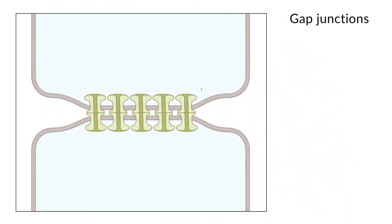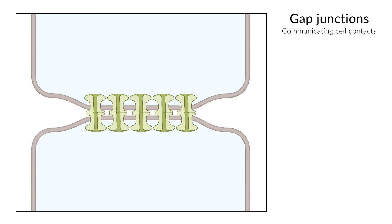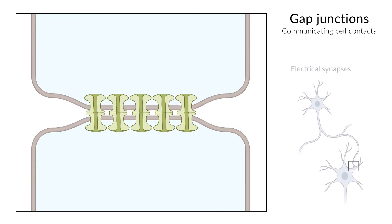Gap junctions are a type of intercellular cell contact, forming channels that mediate communication, much like chemical synapses. Though in contrast to chemical synapses, they permit the passage of electrical signals. Therefore, these cell contacts are also called electrical synapses.